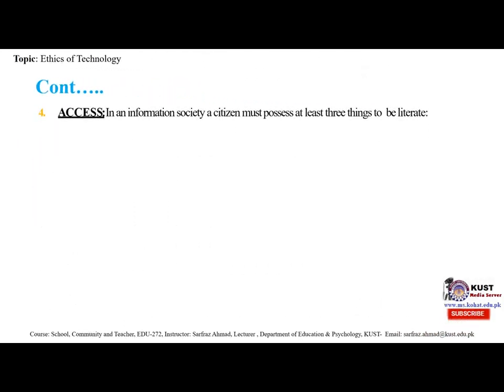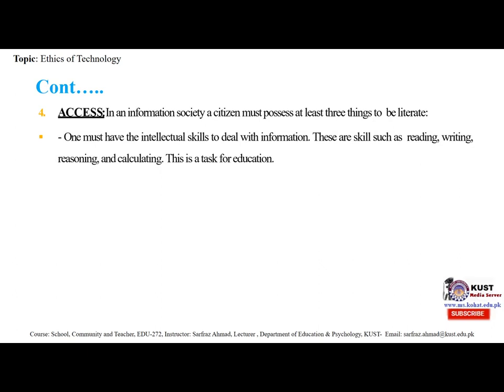The fourth ethical issue is access. To have access to something means that you are able to see it or use it. In an information society, a citizen must possess at least three things. First, one must have the intellectual skills to deal with information — skills such as reading, writing, reasoning and calculating. This is a task for education.